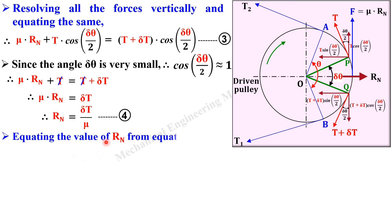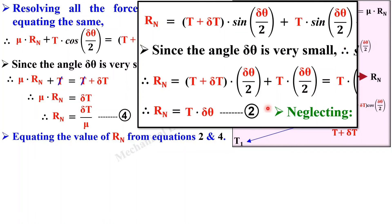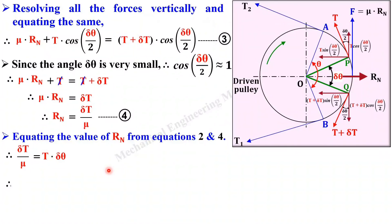Equating the value of Rn from equation 2 and equation 4: delta T / mu = T·delta theta. Further simplification gives: delta T / T = mu·delta theta. This is equation number 5.